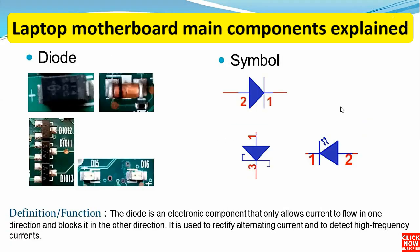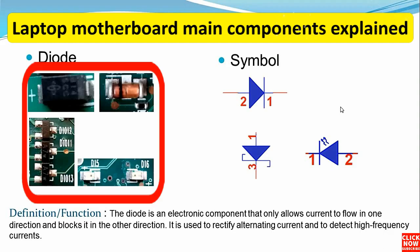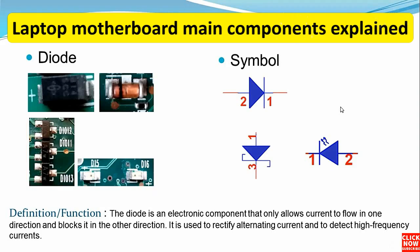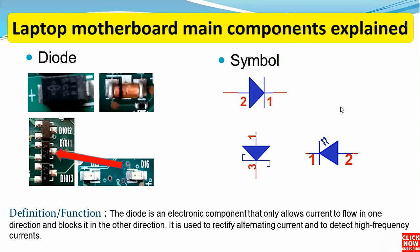The second component we're going to talk about is the diode. As you can see here, we have many types of diodes. We have a normal diode, a Zener diode, three-terminal diodes — which work on basically the same principle as a transistor — and an LED diode.